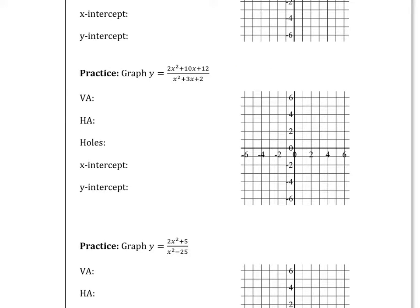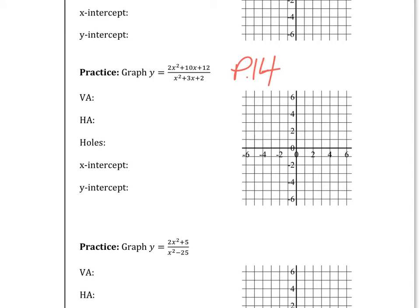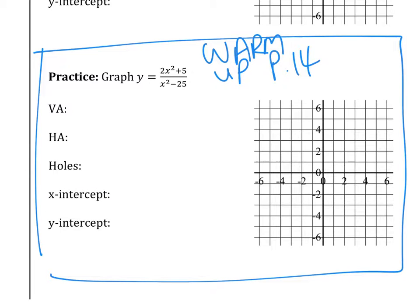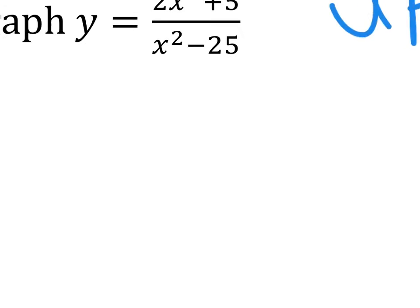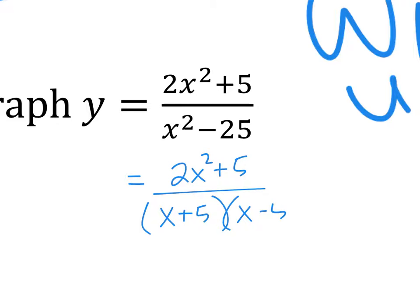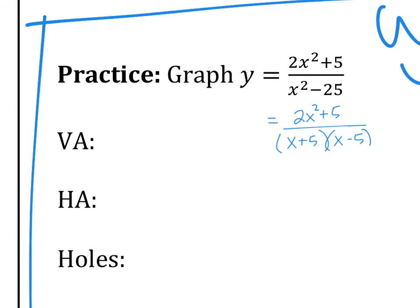All right, page 14, this middle one — yes, it is intermediate. Before you do anything, you need to factor. The top is not factorable; the bottom is (x + 5)(x − 5). So that means the vertical asymptotes are x = ±5, whatever does not cancel in the denominator.